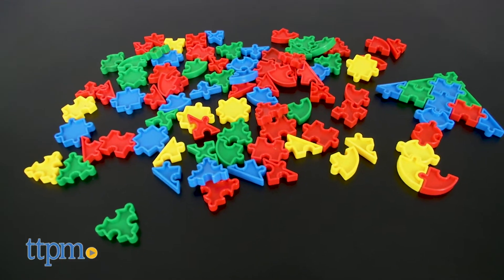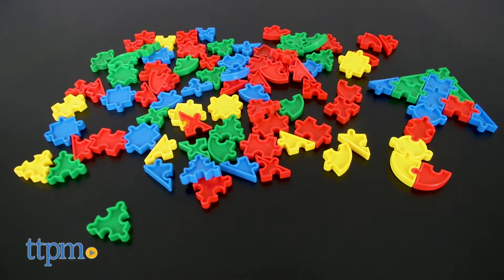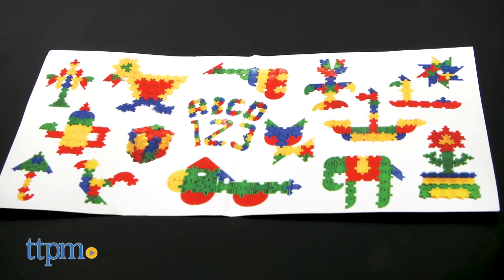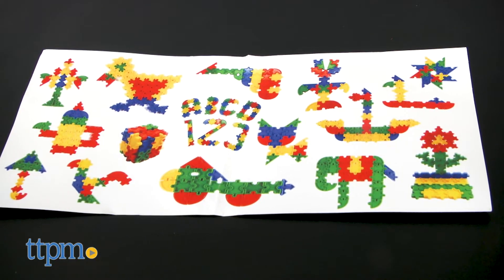Each of the durable plastic pieces comes in a variety of colors and shapes to allow kids to create so many different structures, from animals and objects to letters and numbers.